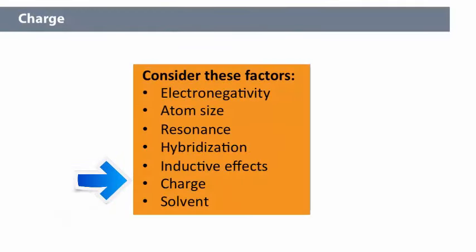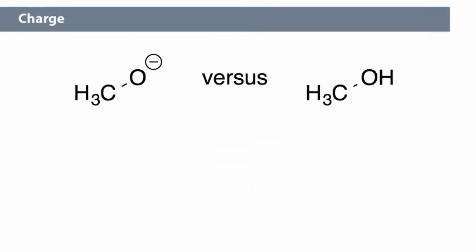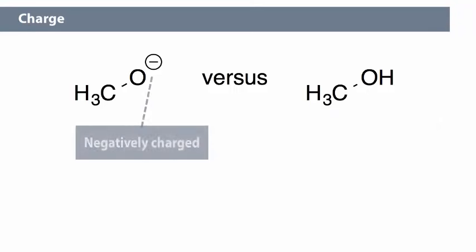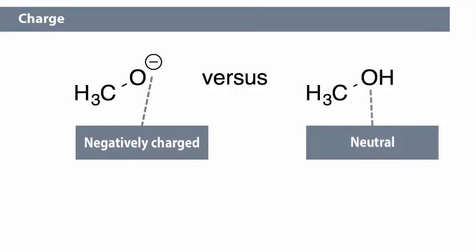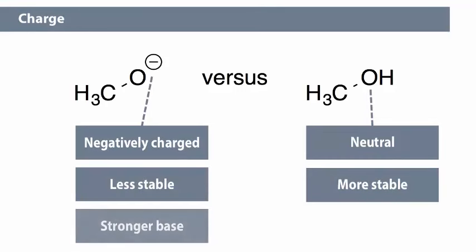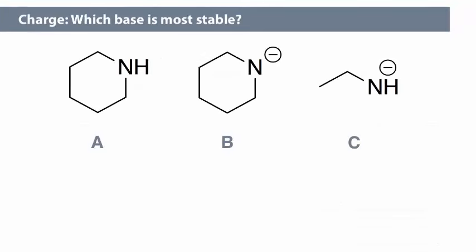Charge is a final factor we will use to compare bases. The only important difference between methoxide with O- and methanol with a neutral oxygen is that the methoxide has a negative charge on oxygen while methanol is neutral. The neutral species is more stable than the charged one, making methoxide the stronger base and methanol the weaker base. Of the three bases shown here, Base A is most stable.